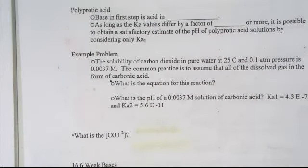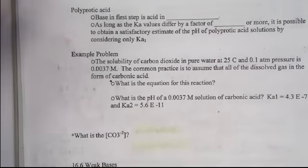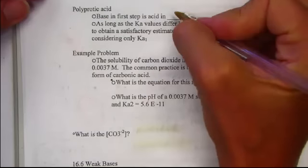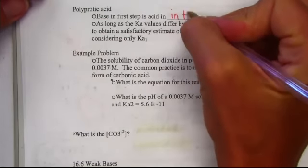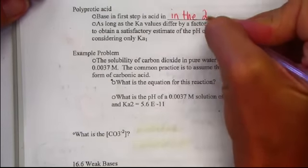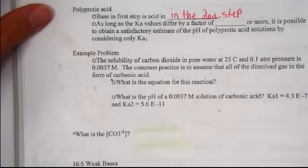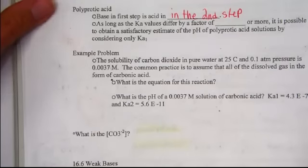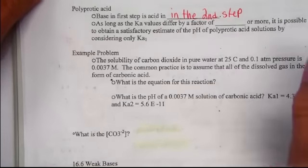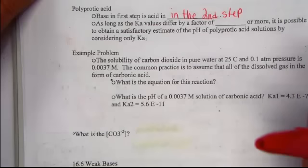Polyprotic acids will act as a base in the first step and an acid in the second step. In a stepwise fashion, the base in the first step then becomes its acid in the second step, and that makes sense according to Bronsted-Lowry theory.